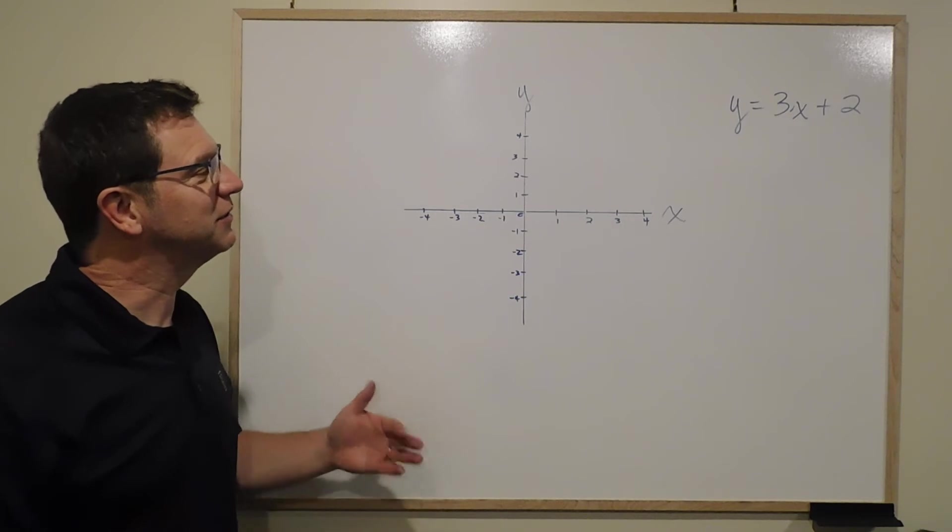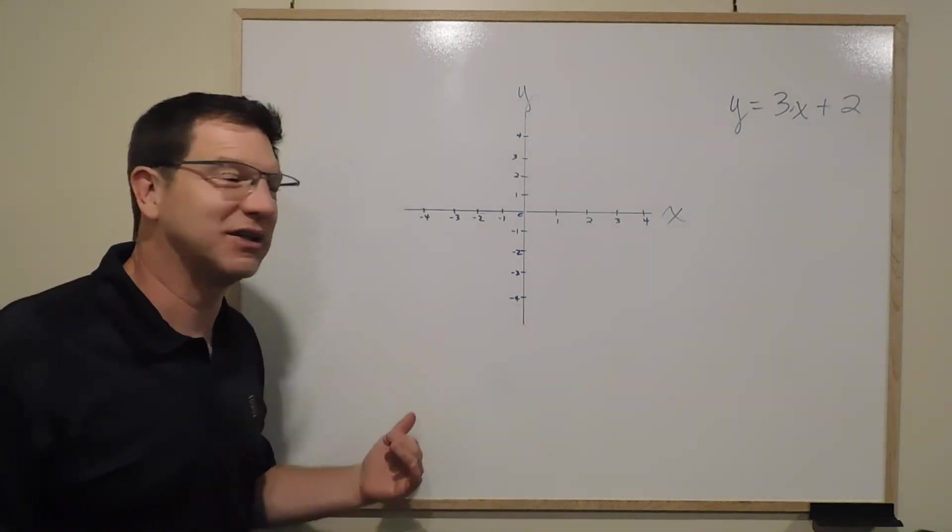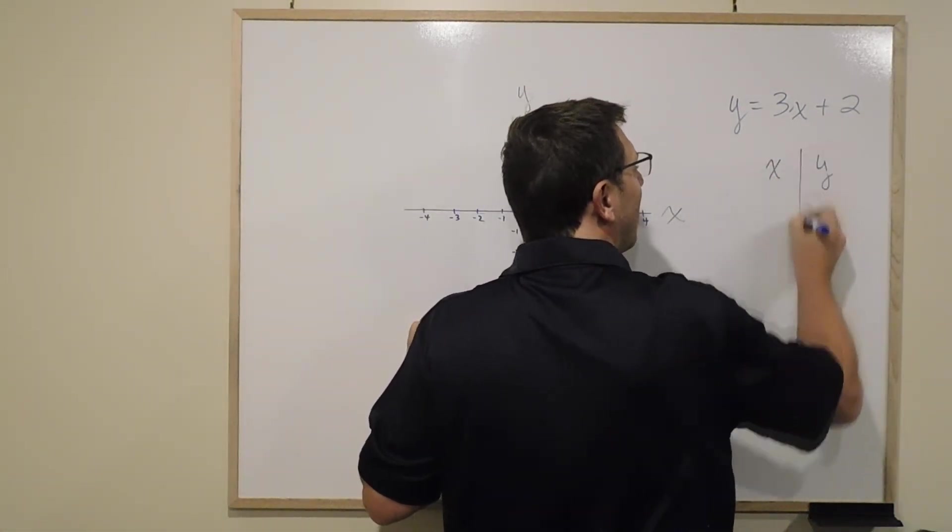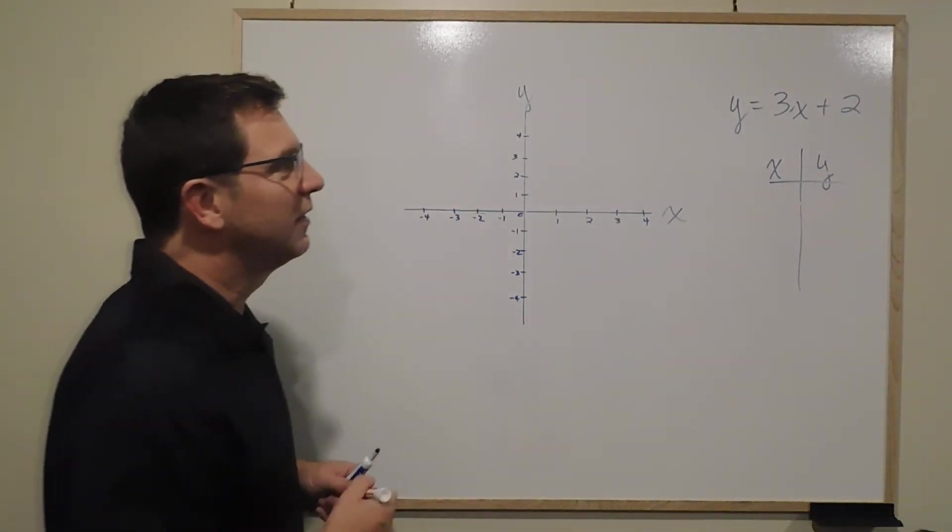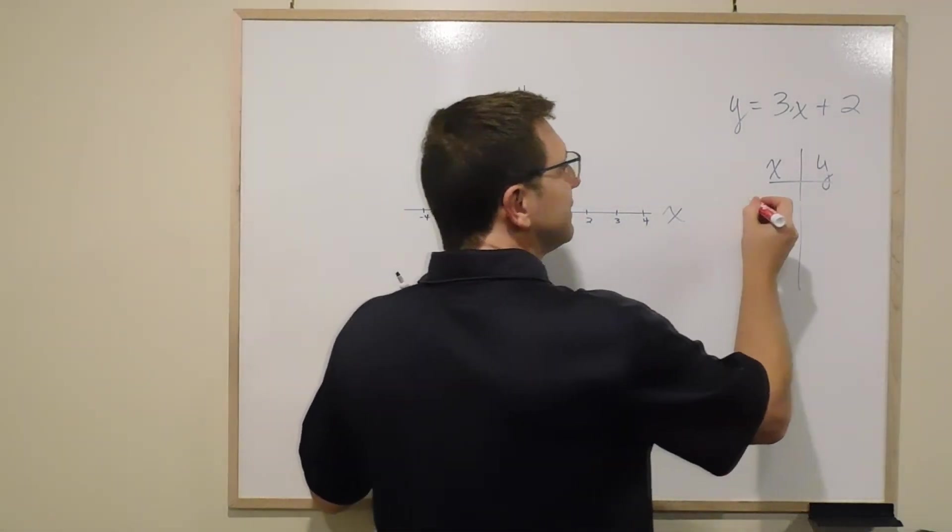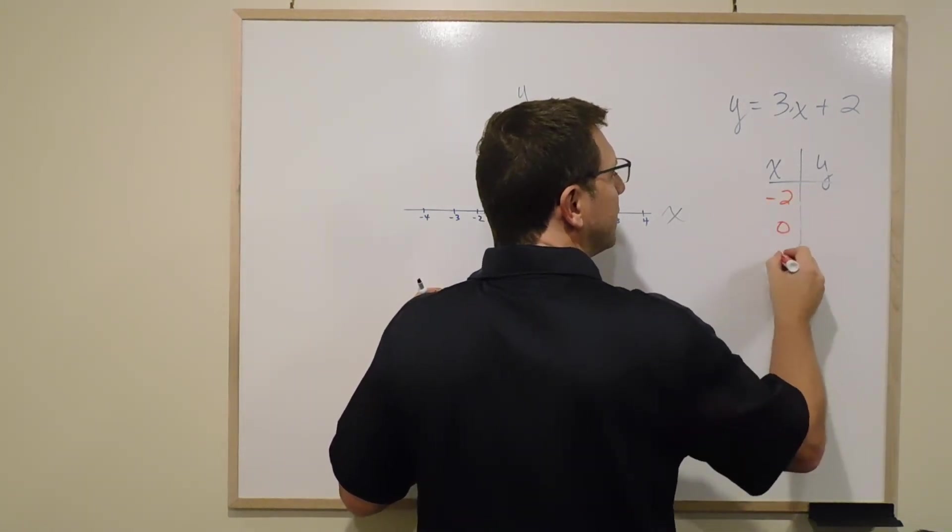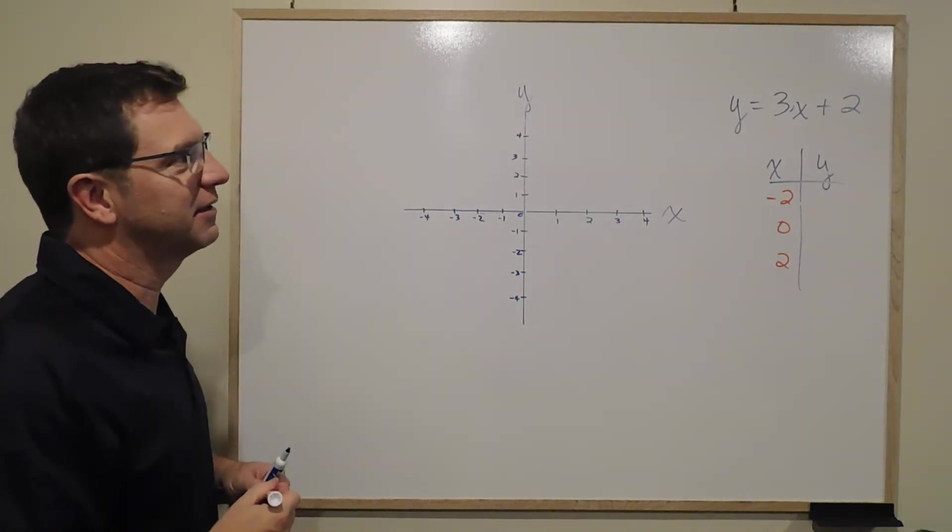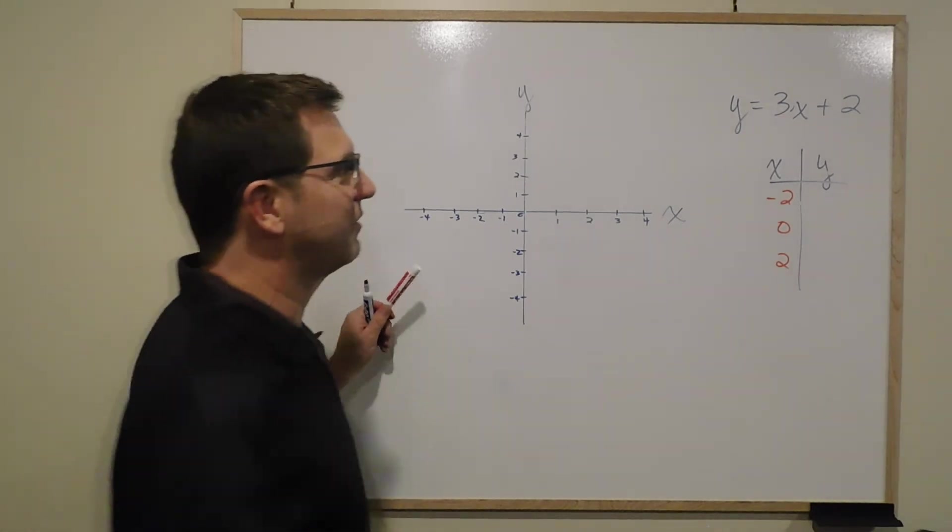That's because you can substitute in whatever you'd like, and we're going to build something called a table of values. Think of it this way: x and y. I'm going to do one right here. So if x is negative 2, 0, or 2, we'll see what we get.